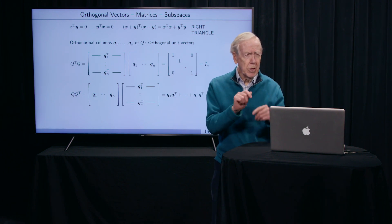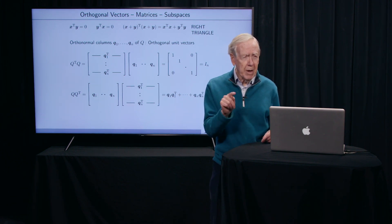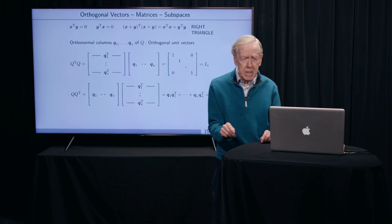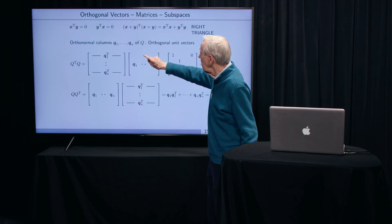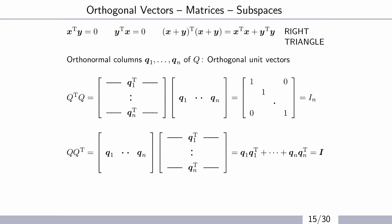We have something called orthogonal matrices. An orthogonal matrix is when we have these columns. I'm always going to use the letter Q for an orthogonal matrix. And I look at its columns, and every column is perpendicular to every other column.